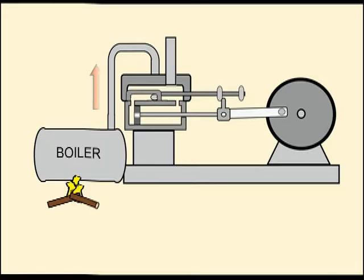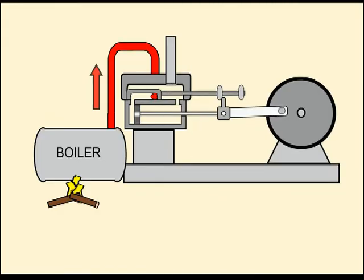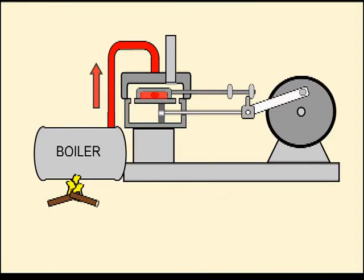The steam, illustrated here using red lines, is fed to the cylinder from the left side of the piston. The pressure of the steam pushes the piston to the right side of the drawing.